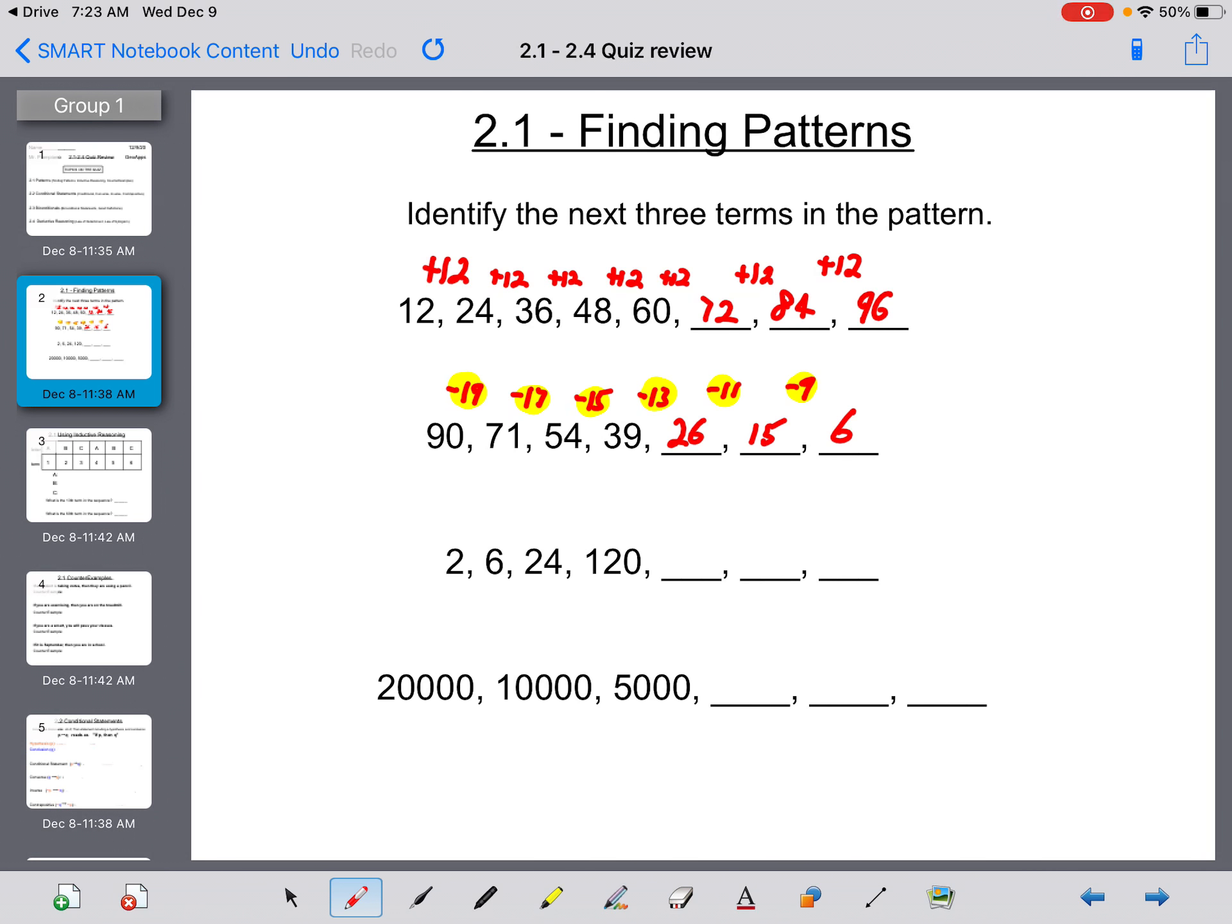Now if we look, we go from 2 to 6. Well, it could be plus 4, but 6 plus 4 is definitely not 24. So this could be times 3. 6 times 4 is 24, 24 times 5 is 120, 120 times 6 is 720, 720 times 7 is 5,040, and 5,040 times 8 is 40,320. So this time you're just increasing the number you multiply by by 1.